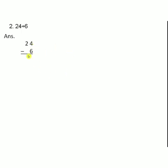Second problem: 24 divided by 6. What we need to find out here? Quotient. First we subtract 24 minus 6 is 18. Next, 18 minus 6 is 12. Next, 12 minus 6 is 6. Next, 6 minus 6 is 0.